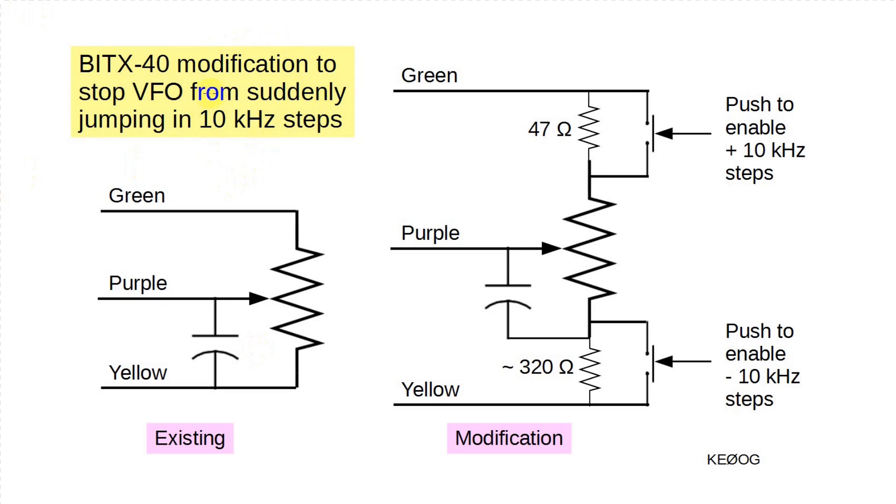The drawing on the left shows the standard hookup to the VFO potentiometer. The pot works as a voltage divider. Supply voltage is applied at the top of the pot and ground at the other. The wiper senses a higher voltage when tuned up and a lower voltage when tuned down. This goes to the Raduino board, which acts as a voltage-controlled oscillator. The Raduino is set up so that when the voltage is high enough, the VFO switches from 100 hertz per step to 10 kilohertz per step, a factor of 100 times faster.